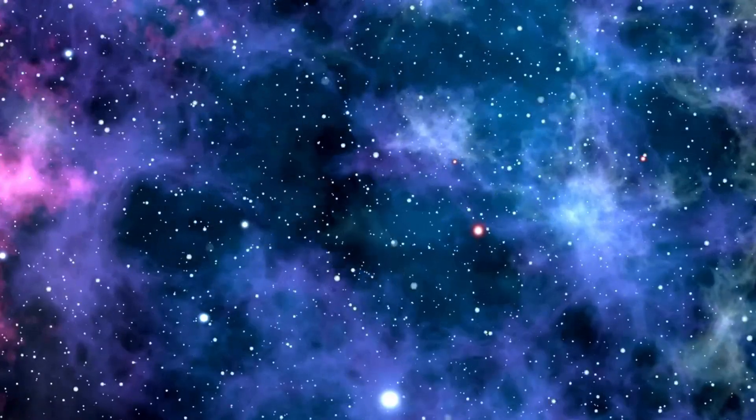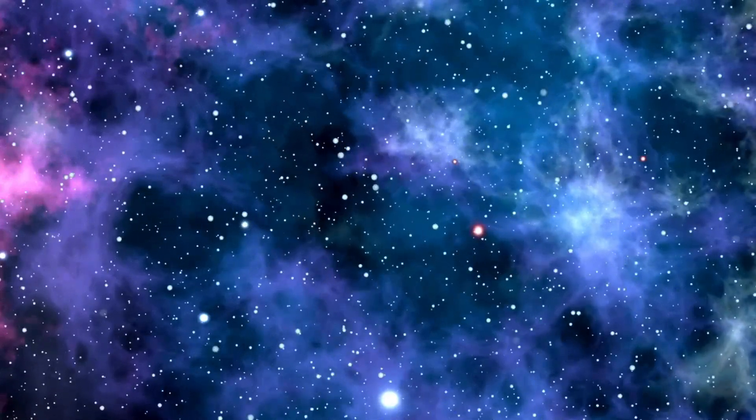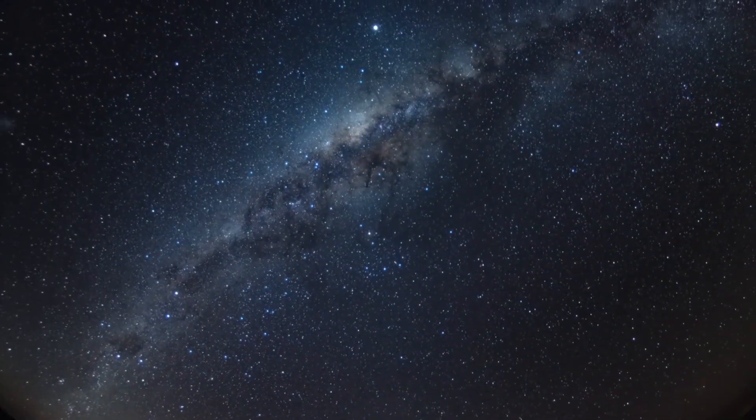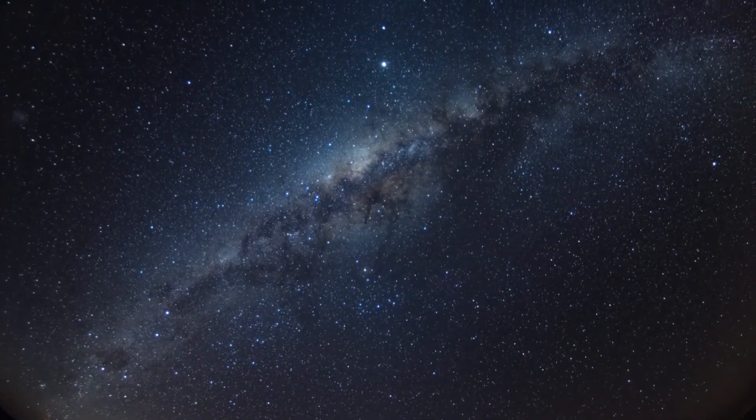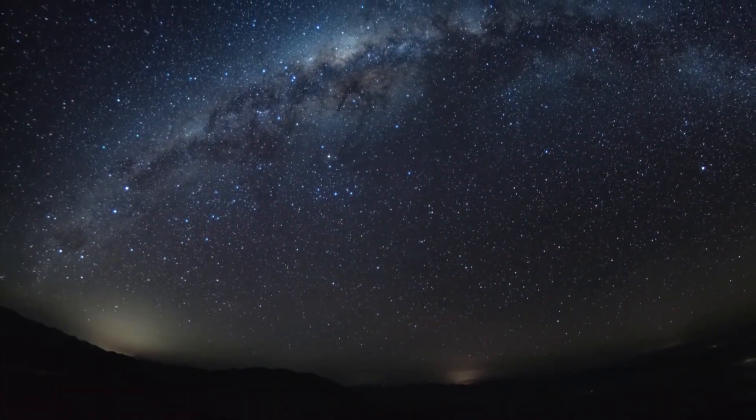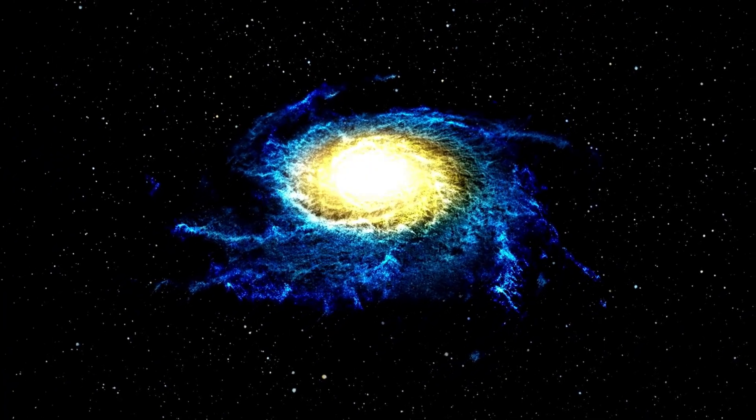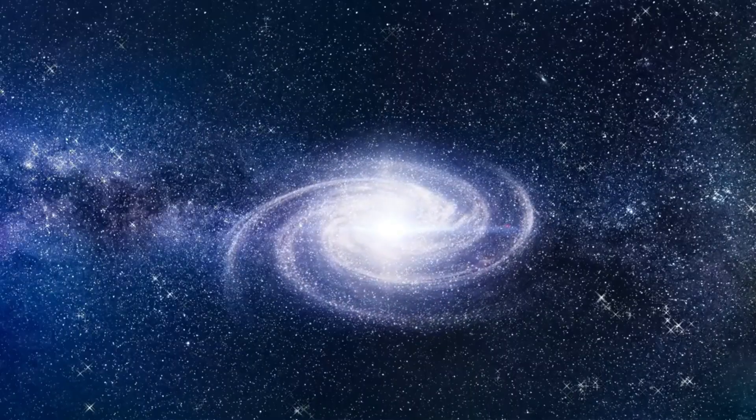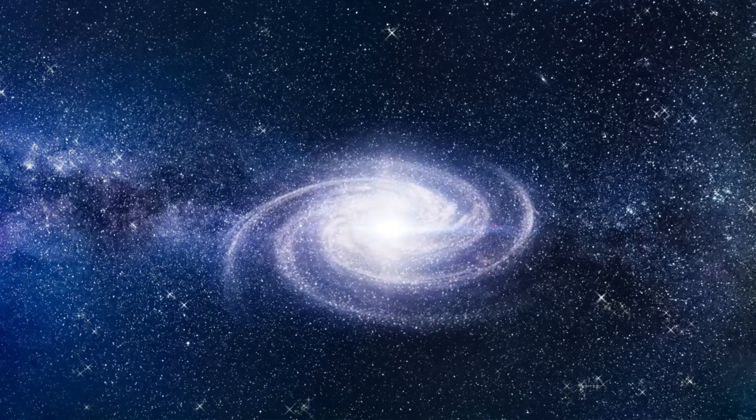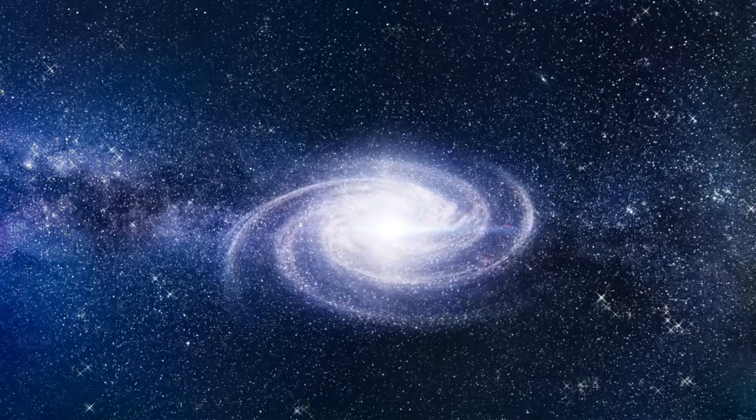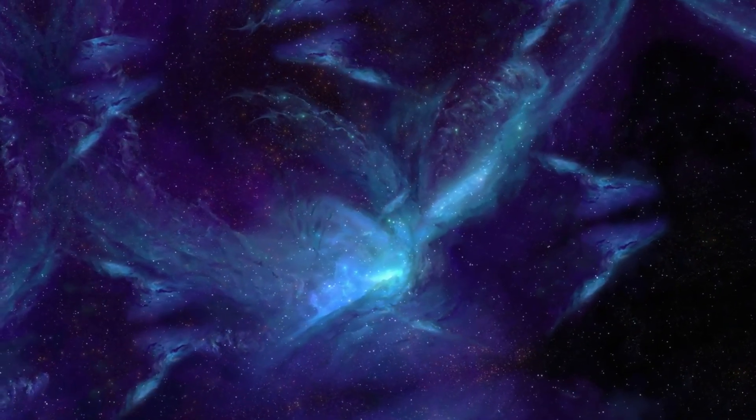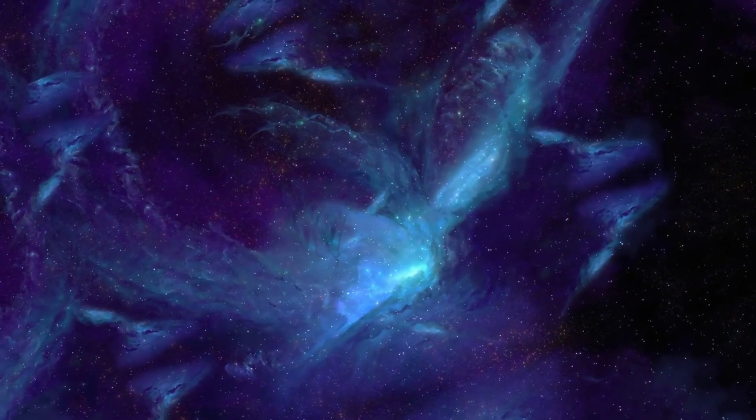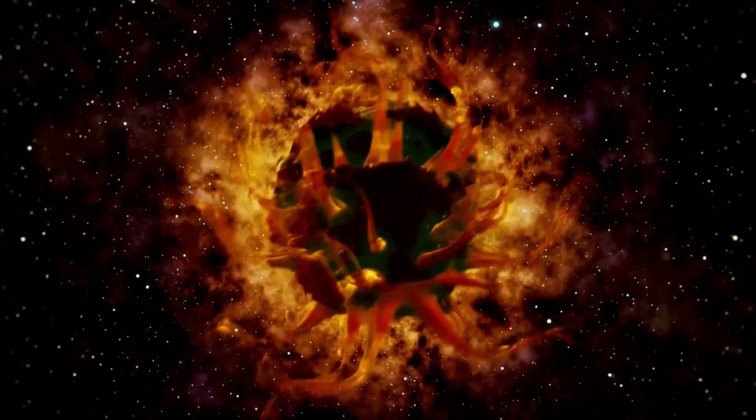As the universe expanded, matter began to coalesce under the influence of gravity. This gravitational force joined particles, birthing stars, cosmic systems, and eventually planets like our own Earth. Picture the universe evolving into the diverse and staggering phenomena we see dispersed across the cosmos today. Despite its huge size, the universe is incredibly empty. If we were to shrink our entire solar system to the size of a quarter, the nearest star would still be about two soccer fields away.